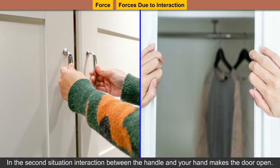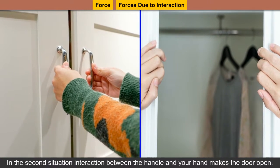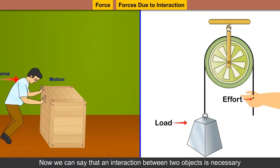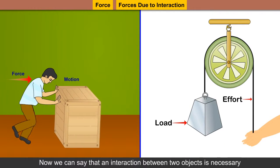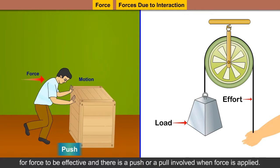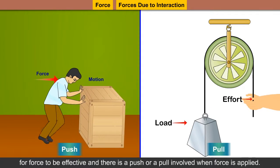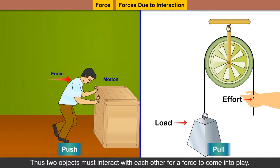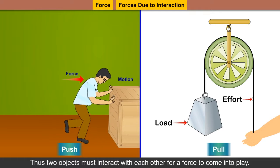In the second situation, interaction between the handle and your hand makes the door open. We can say that an interaction between two objects is necessary for force to be effective, and there is a push or a pull involved when force is applied. Thus, two objects must interact with each other for a force to come into play.